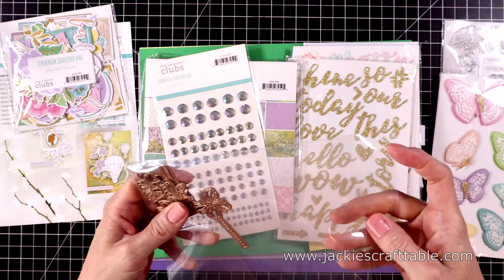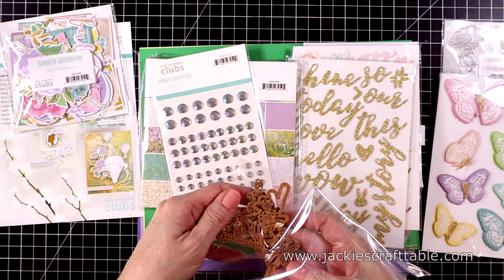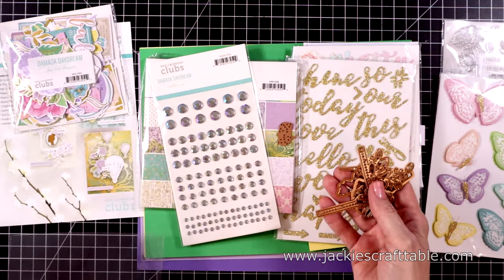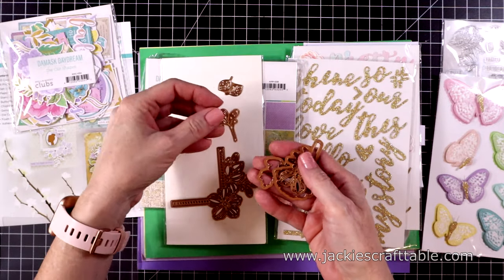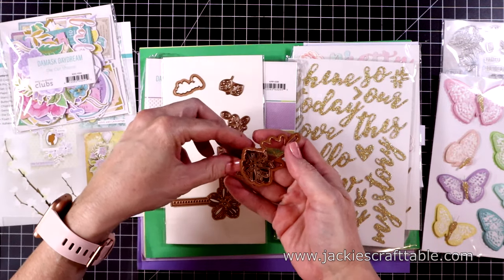And then here are the dies. I'm going to lay these out and give you a close-up look at these. So it creates a beautiful floral frame. With the largest die you can cut that out twice and make a frame.